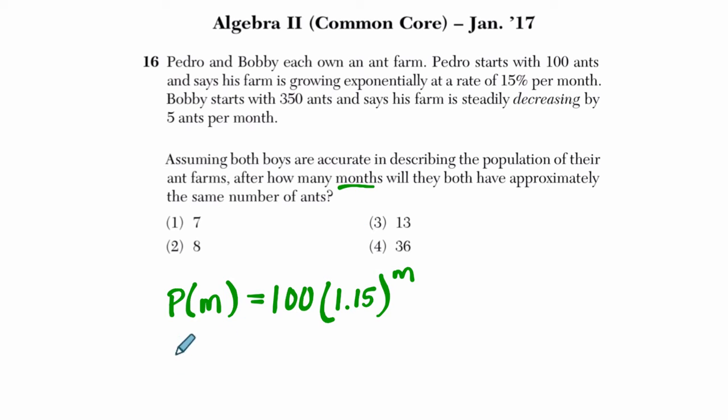Bobby starts with 350 ants. So Bobby's ants, based on months, starts at 350. And said his farm is steadily decreasing, so subtracting 5 ants per month.